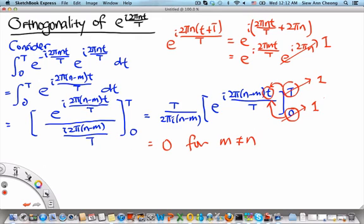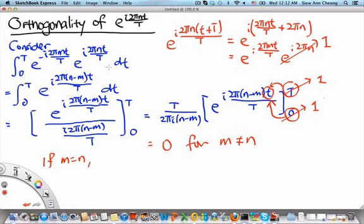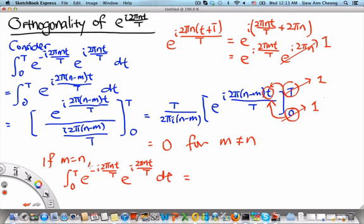What if m is equal to n? If m is equal to n, then we see from the initial integral that this will become the integral from 0 to T of e to the minus i 2π nt over capital T times e to the i 2π nt over capital T dt. These two factors are going to cancel each other, so we are effectively evaluating the integral of 1 dt, which equals T.